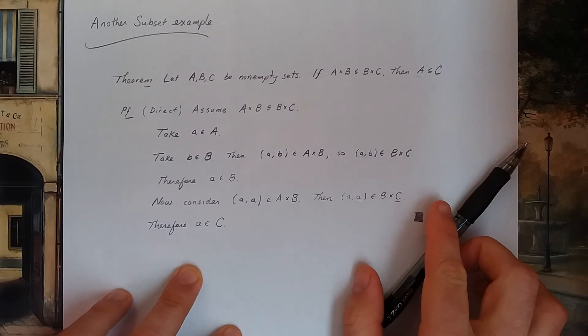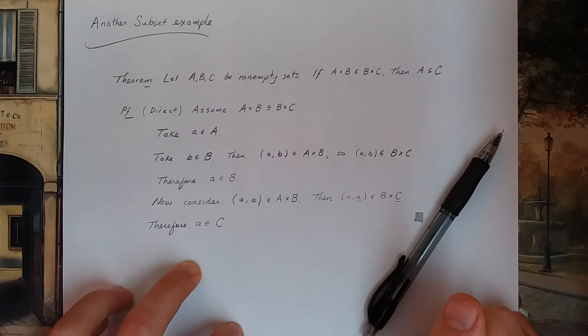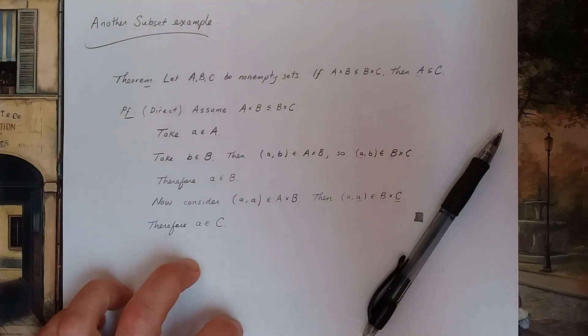Okay, so I'm also going to take an element b in B. I know that this is possible because A, B, and C are non-empty. So elements actually exist in these sets.